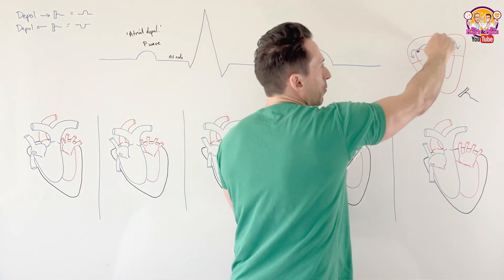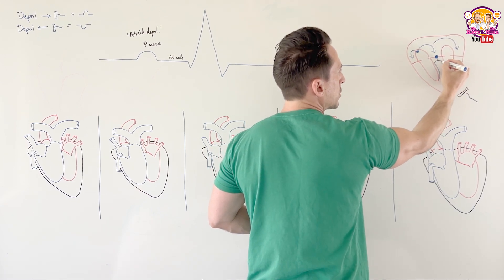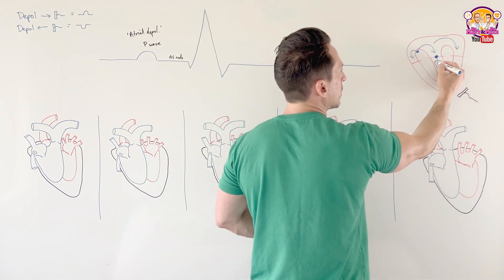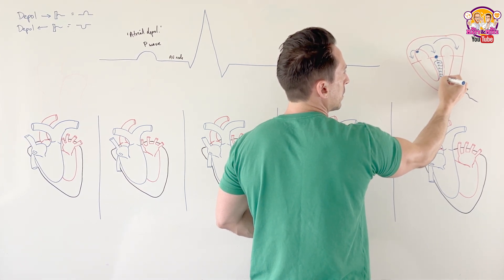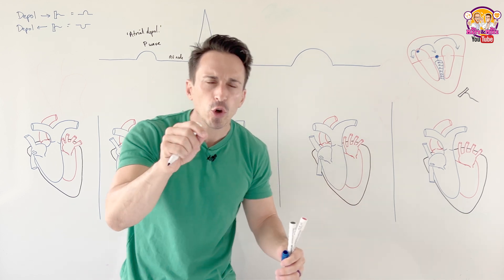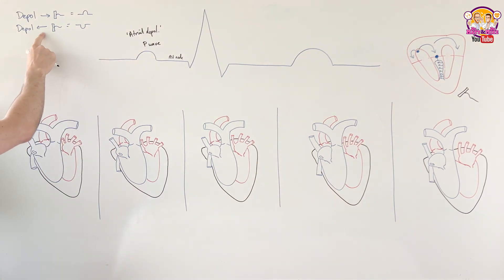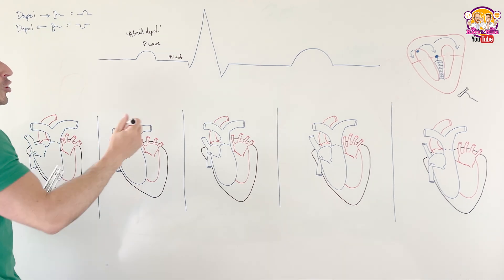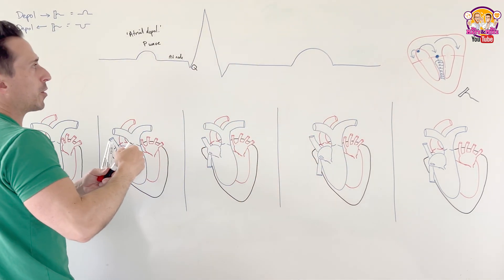Once it's moved through the AV node, the signal moves through more conduction branches called the bundle branches. The depolarization event moves through the bundle branches, going away from the lead. Because the septum isn't very big, it's short and sharp — giving us a short, sharp bump down on the ECG. We call that the Q wave, which is representative of septal depolarization.